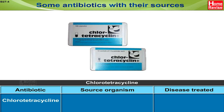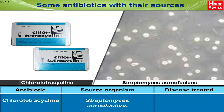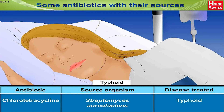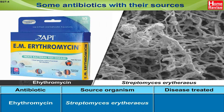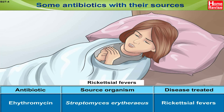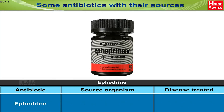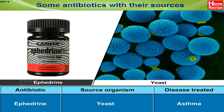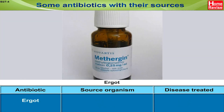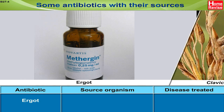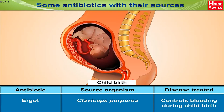The source of chlorotetracycline is Streptomyces aureofaciens. It is used to treat typhoid and rickettsial fevers. The antibiotic Ephedrine has its source in yeast and is used against asthma. The source of the antibiotic Ergot is Claviceps purpurea, and it controls bleeding during childbirth.